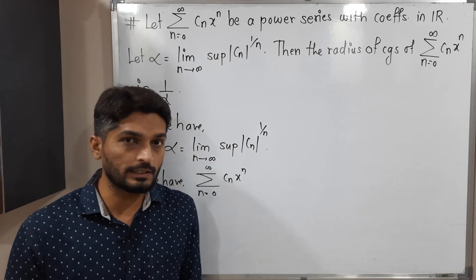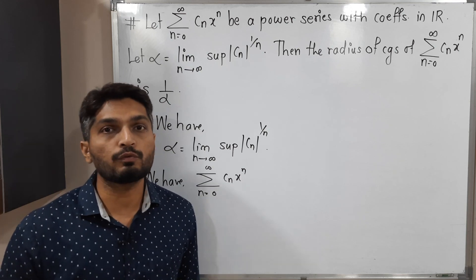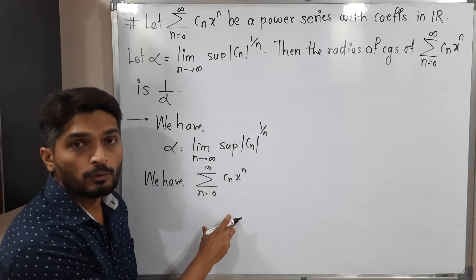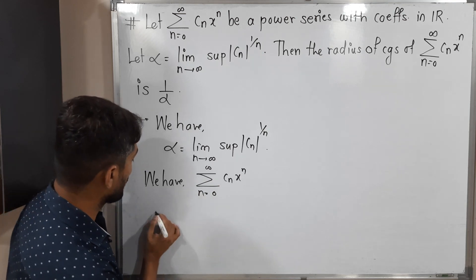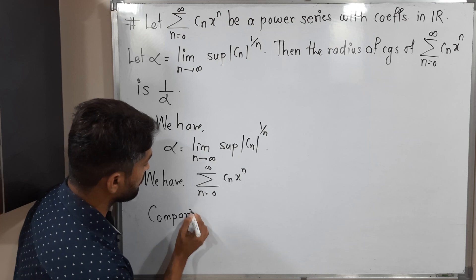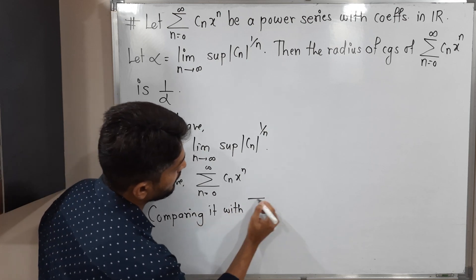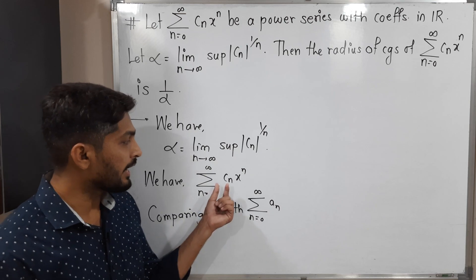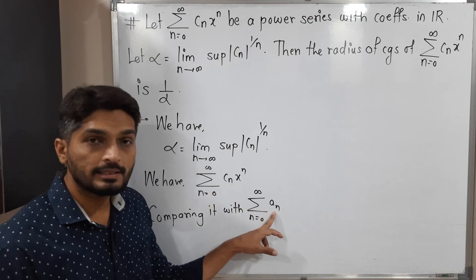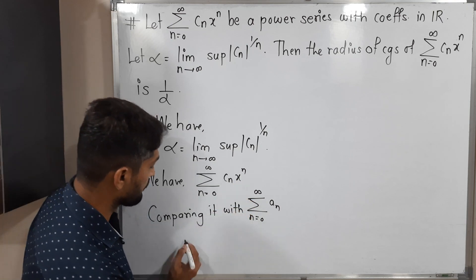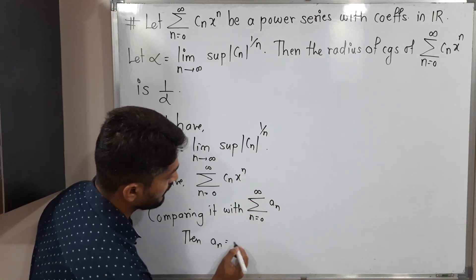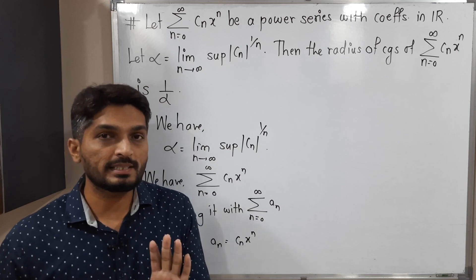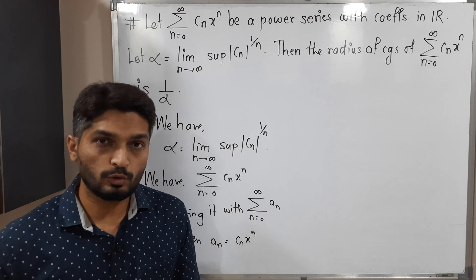The meaning of radius of convergence we have already seen in our previous video. To start the proof, I am going to compare this series with a series of real numbers. We generally write a series of real numbers as summation aₙ. Comparing, we can say aₙ = cₙxⁿ. Before starting the actual proof, I am going to work on finding the value of one important limit.